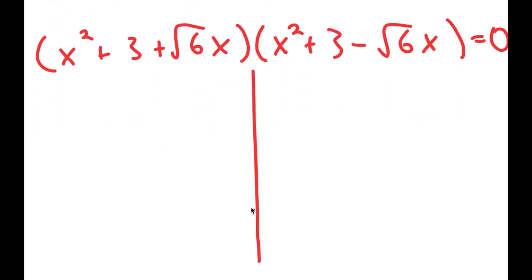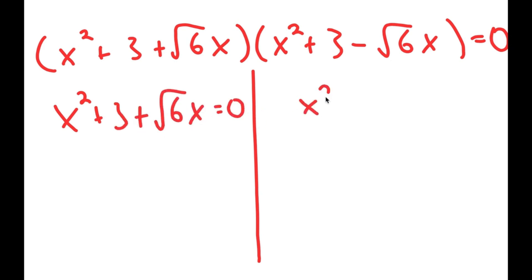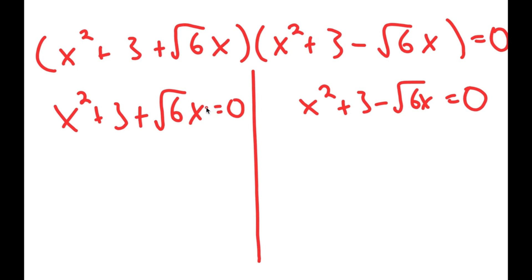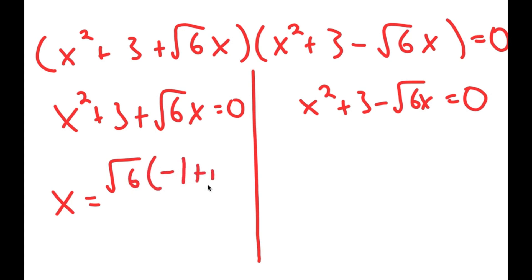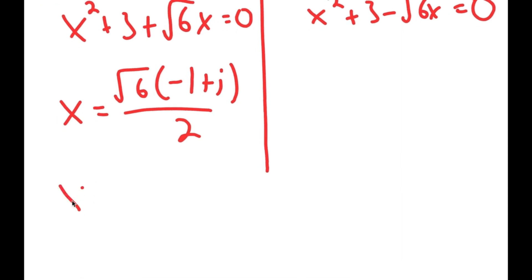This gives me two equations. I have x squared plus 3 plus square root of 6 times x equals 0, and x squared plus 3 minus square root of 6 times x equals 0. Because both of these are quadratic equations, you can use the quadratic formula to solve them — I'm not going to do that in the video, but you can try that yourself. You should get that x equals square root of 6 times negative 1 plus i, all over 2, and x equals square root of 6 times negative 1 minus i, all over 2.